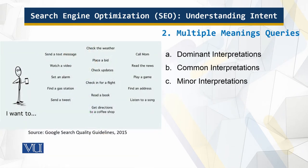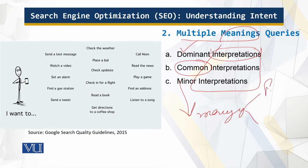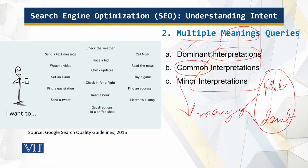When the user types keywords there can be multiple meanings associated with the query. There are dominant interpretations, which Google has implemented in its algorithms. Then there are common interpretations — if you type 'Mercury,' this could be the planet Mercury or the element Mercury. To be on the safe side, both results are displayed: a combination of the planet and the element.